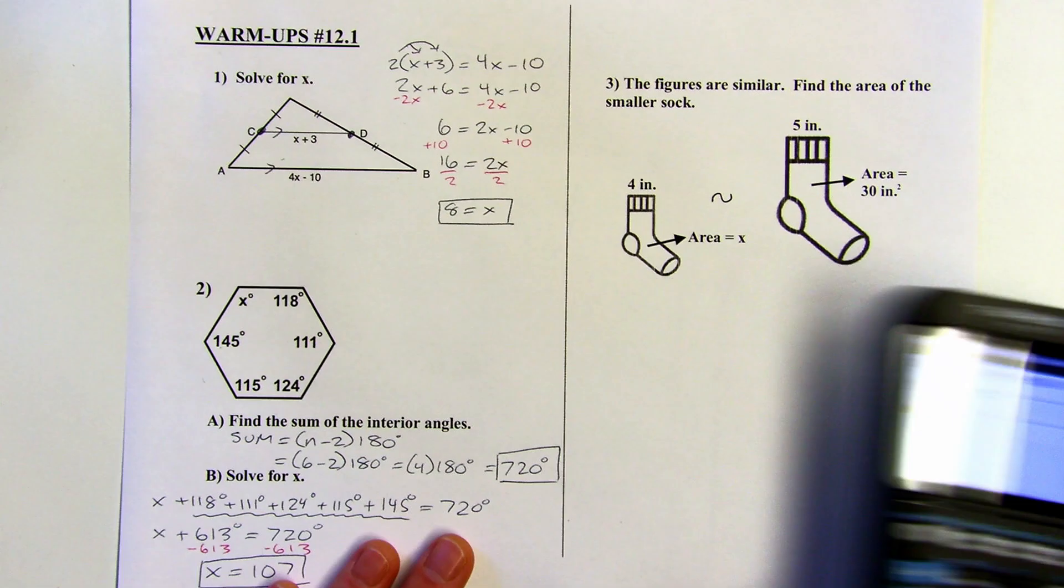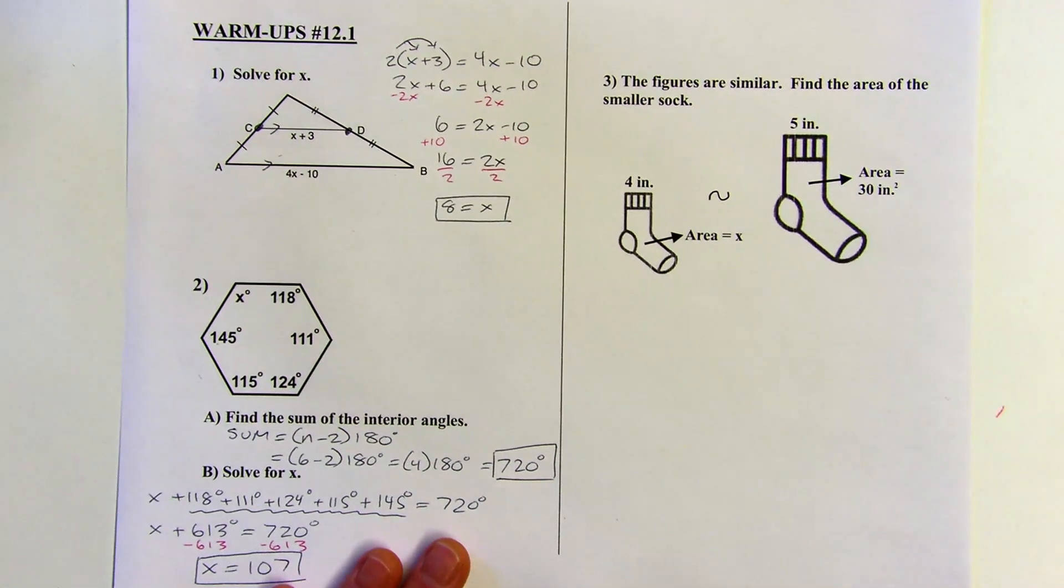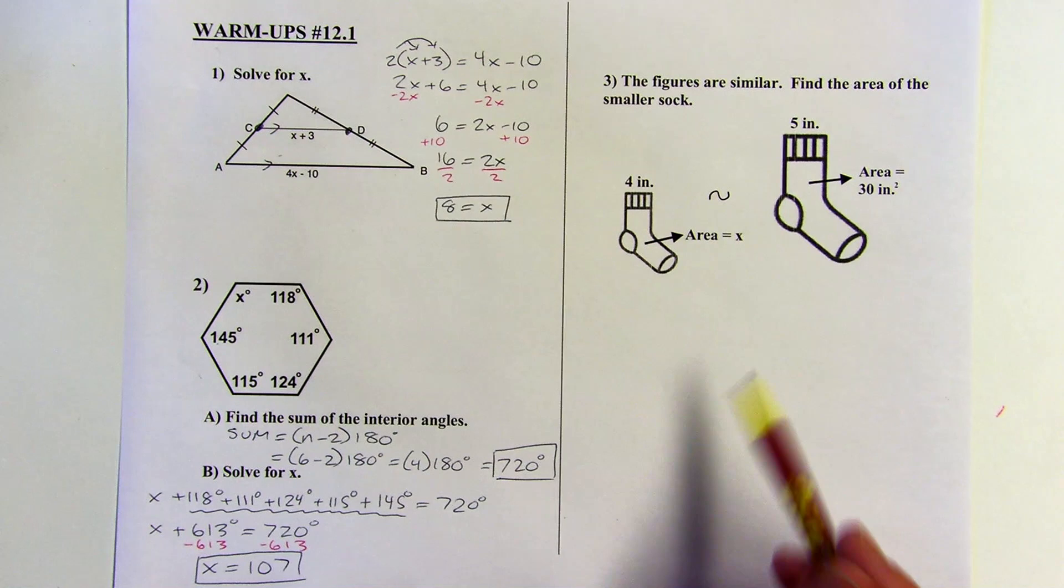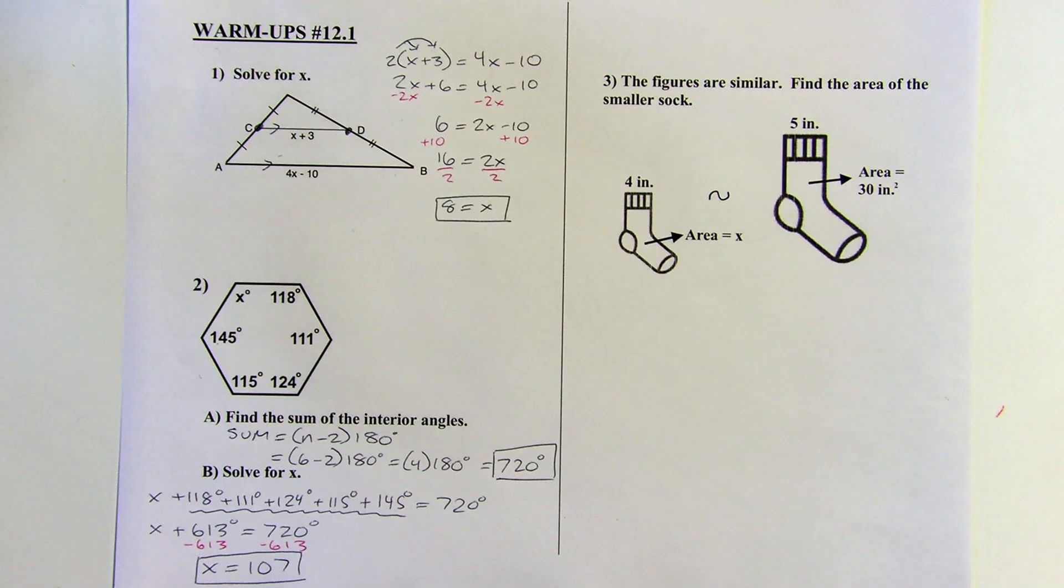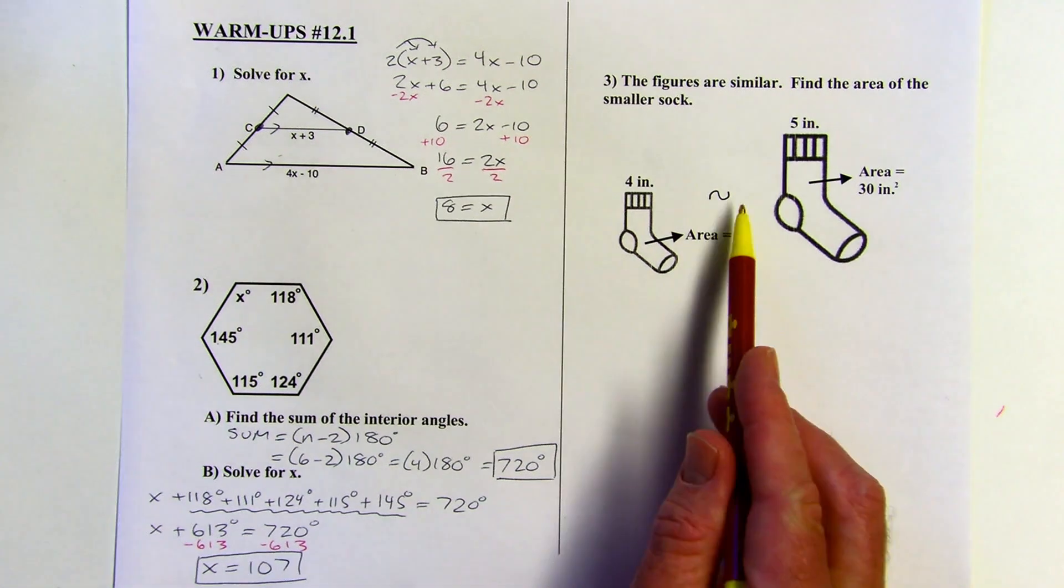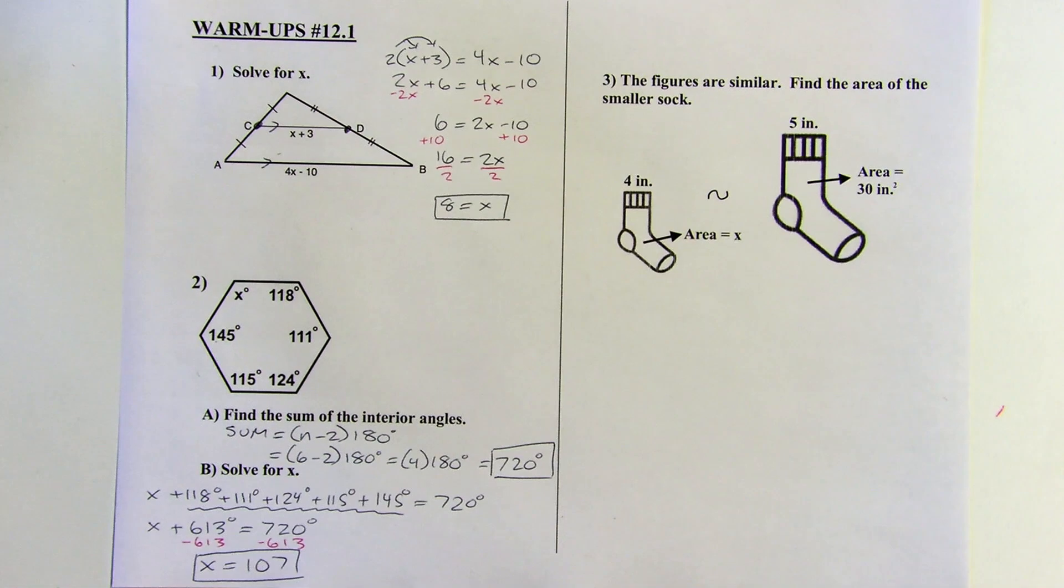All right. And then our last problem here, we've got two similar figures. Hey, they're socks. Like I guess this one got shrunk in the dryer, right? So they're similar. So they're the same shape, but they're different sizes. So there's my symbol for similar.